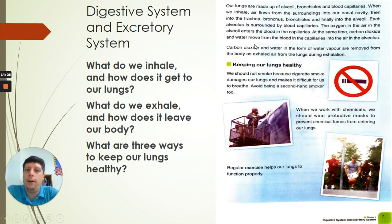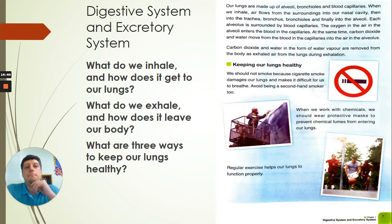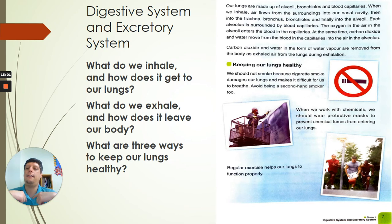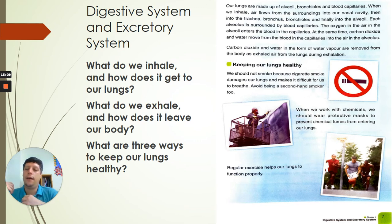The oxygen in the air in the alveoli enters the blood in the capillaries. At the same time, carbon dioxide and water move from the blood in the capillaries into the air in the alveolus. The capillaries are full of blood and the alveolus are full of air. After breathing in and the air travelling through the nasal cavity, trachea, bronchus, bronchioli, and into the alveoli, it gets turned into carbon dioxide and needs to get out.